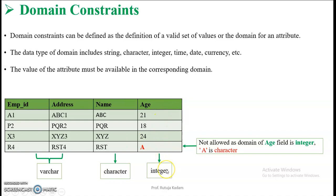Now look at the age field. For employee ID R4, if we try to enter 'A' as the age value, it should not be accepted because we declared the domain of age as integer and 'A' is a character. So whenever we try to enter a value outside the declared domain, it is not allowed.